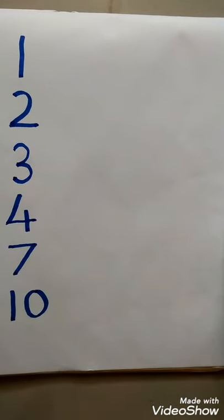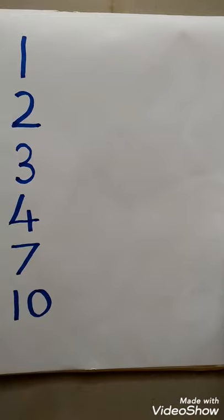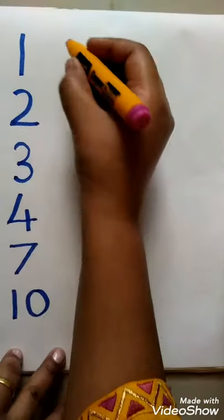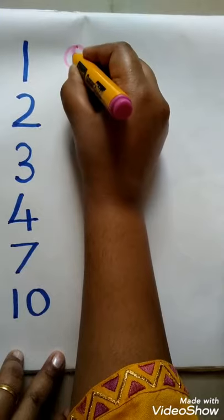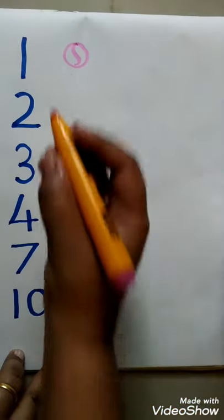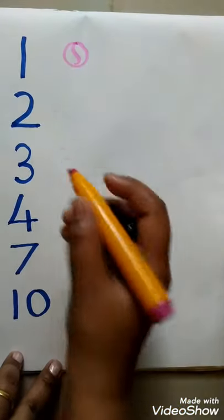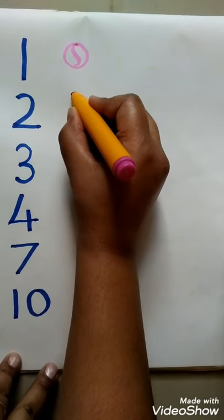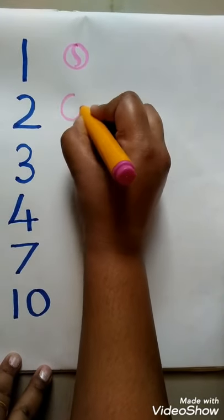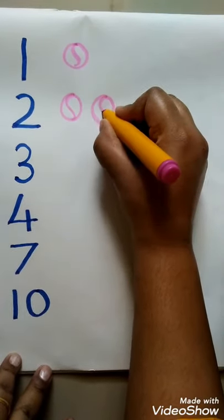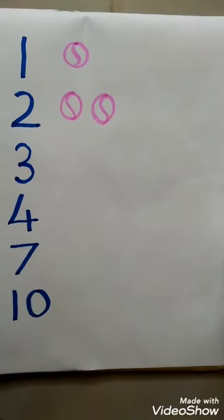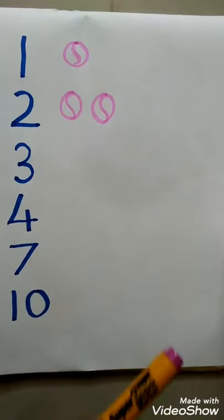So now I will draw the balls for values. So number 1 — how many balls? 1 ball. Number 1, 1 ball. Number 2 — count how many balls? 1, 2. How many balls? 2 balls.